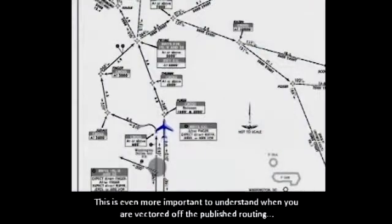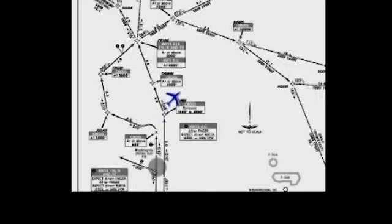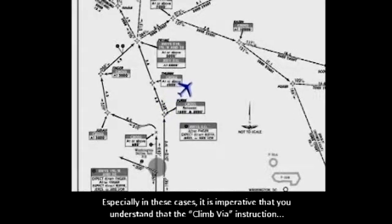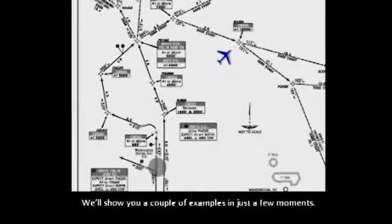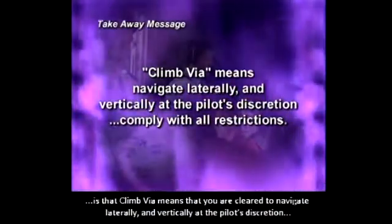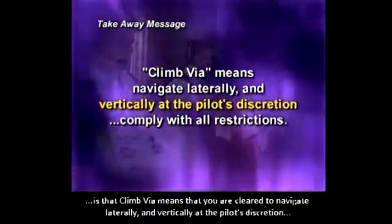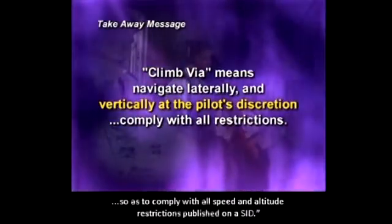This is even more important to understand when you are vectored off the published routing and are issued instructions direct to a waypoint on the SID. Especially in these cases, it is imperative that you understand that the climb via instruction clears the pilot to navigate laterally and vertically in order to properly join the SID profile. So remember, the basic premise of this new phraseology is that climb via means that you are cleared to navigate laterally and vertically at the pilot's discretion, so as to comply with all speed and altitude restrictions published on a SID.